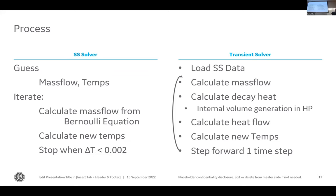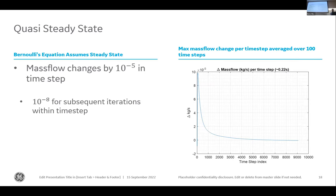The overall process: in steady state, we guess mass flow and temperature, iterate using the Bernoulli equation to calculate mass flow, calculate new temperatures, and stop when delta T is acceptable. In the transient, we load steady state data, calculate new mass flow and decay heat, calculate internal heat generation in the hot pool, calculate heat flow, calculate new temperatures, and repeat. We can use Bernoulli's equation in the transient because we are in a quasi-steady-state situation — mass flow change between time steps is on the order of 10⁻⁵ kg/s, dropping to 10⁻⁸ on the second iteration within a time step.